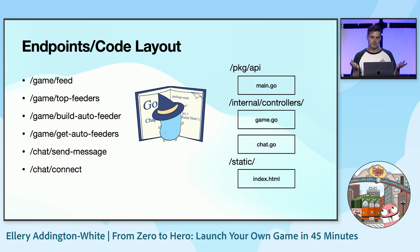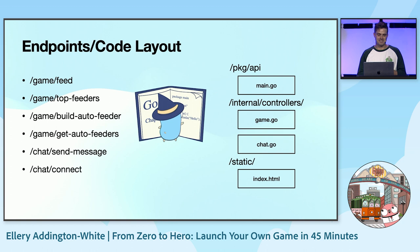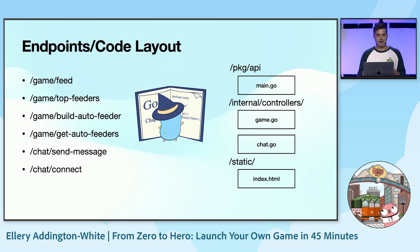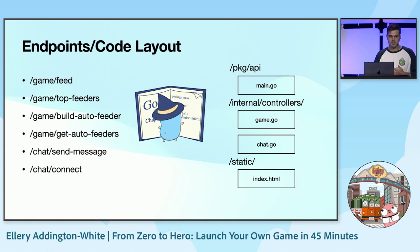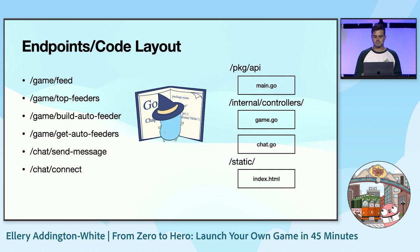Quick layout — we're going to be mainly focusing on the back end. We're going to have a couple of APIs powering this game: a game controller and a chat controller. For the game, we're going to have a feed endpoint for manual feeding, a top feeders endpoint powering the leaderboard, a build auto feeder API for player upgrades, an API to read how many auto feeders you have, and then two chat APIs — one to send messages and one to connect and receive messages.